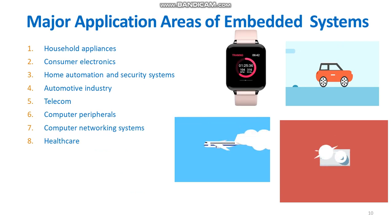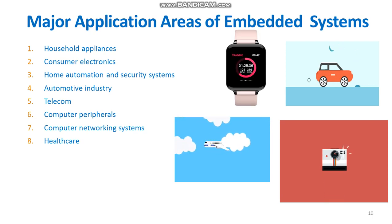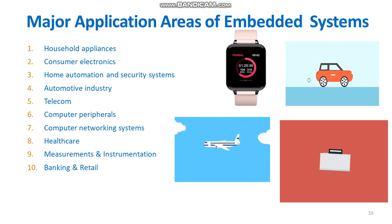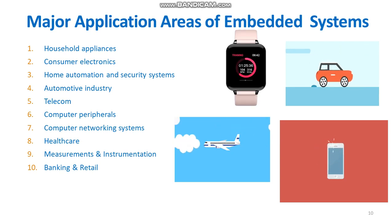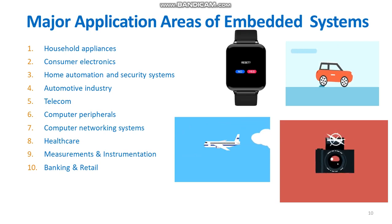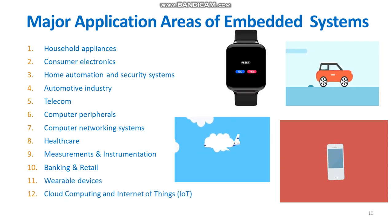In the computer networking systems, all the routers, switches, hubs, firewalls come into picture. In the department of healthcare, we have different kinds of scanners, EEG, ECG machines, etc. Measurement and instrumentation includes all the multimeters, CROs, analyzers. In the banking and retail, we have the automatic teller machines and currency counters. In the wearable devices, we can check the health and fitness trackers. And lastly, cloud computing and the internet of things.